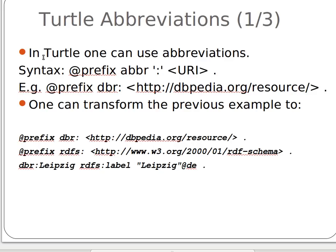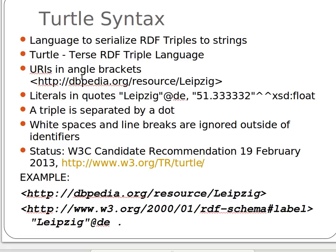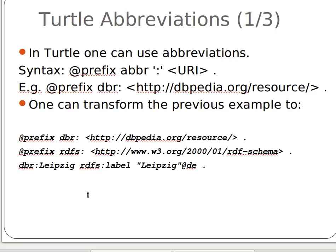In Turtle we can have abbreviations. For the previous full URI example, we can define, for example, prefix 'dbr' for DBpedia resources, as you can see here.